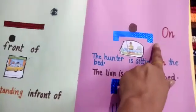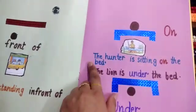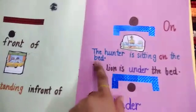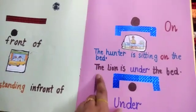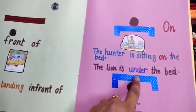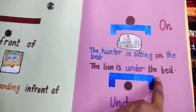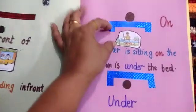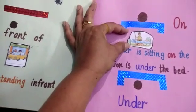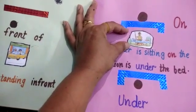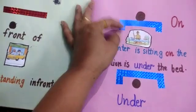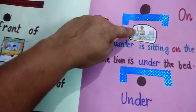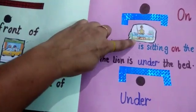On: the hunter is sitting on the bed. The lion is under the bed. In one picture it shows both positions — that is, on and under.